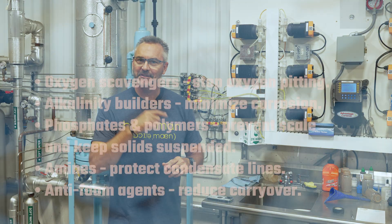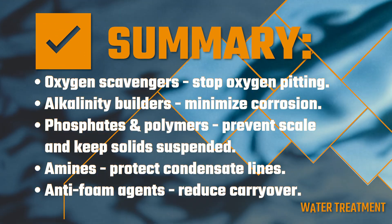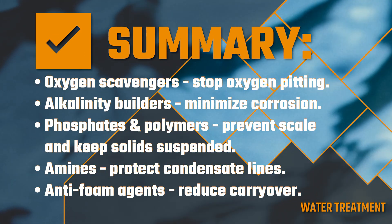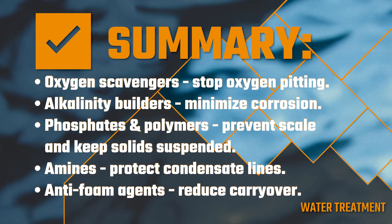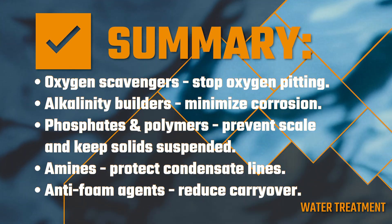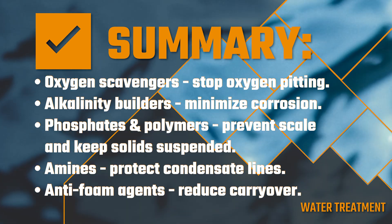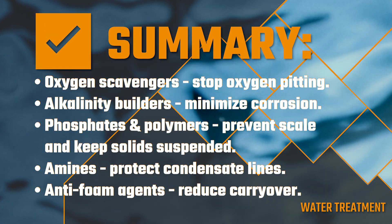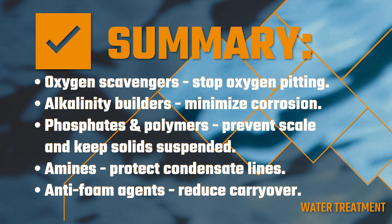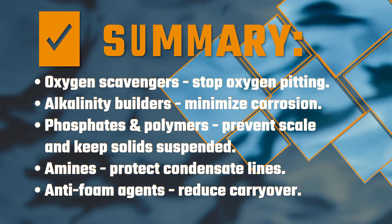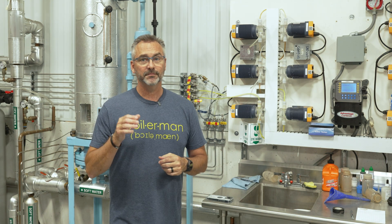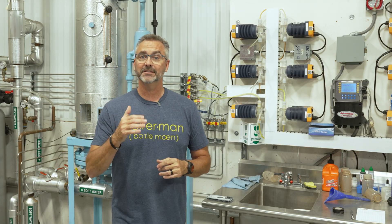In summary: oxygen scavengers stop oxygen pitting. Alkalinity builders and pH control agents minimize corrosion. Phosphates and polymers prevent scale and keep solids suspended, and they protect the condensate lines. Anti-foam agents reduce carryover. Together, these chemicals protect the boiler, the piping, and the steam system from corrosion, scaling, and carryover — maximizing efficiency and equipment life.